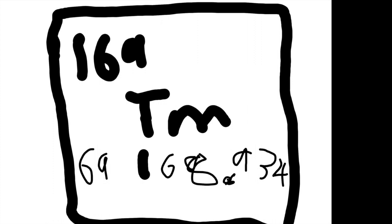Below the TM is 168.934 — that's the atomic mass unit number, which is the average weight of all the isotopes. And on the top left is the number 169.